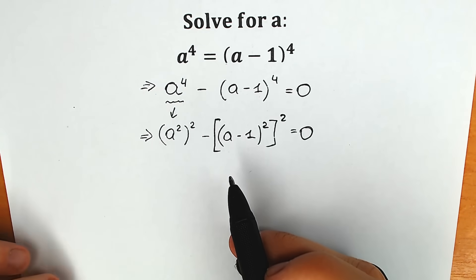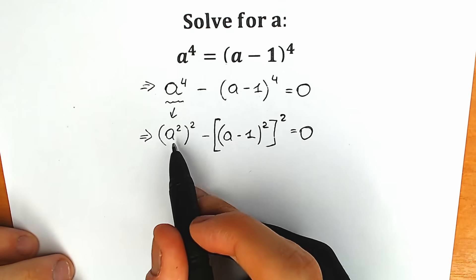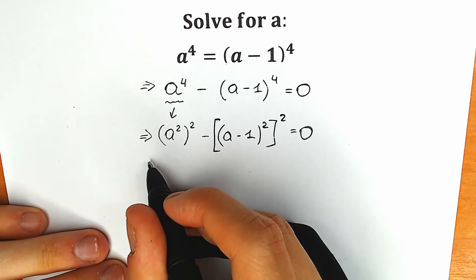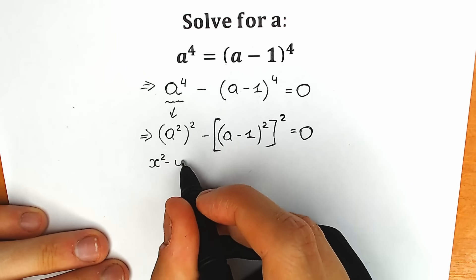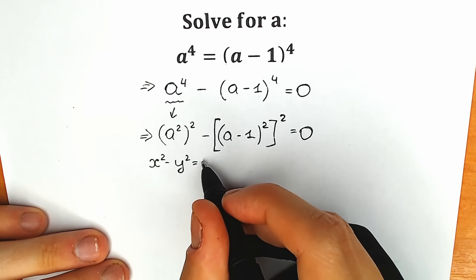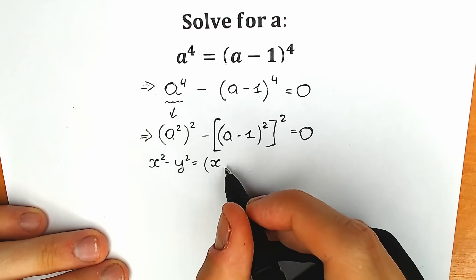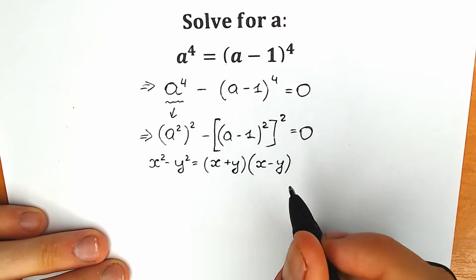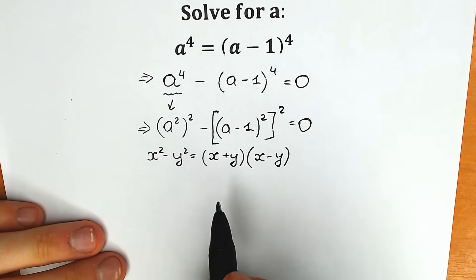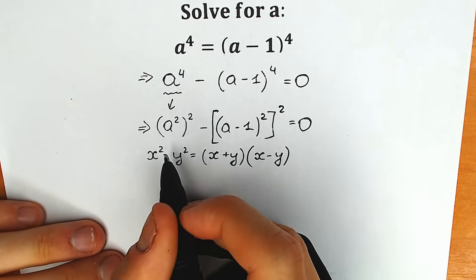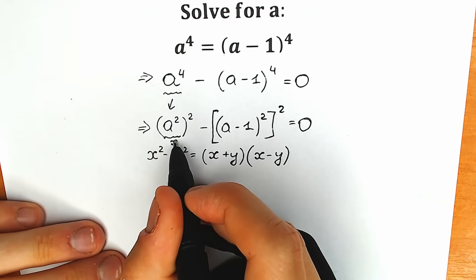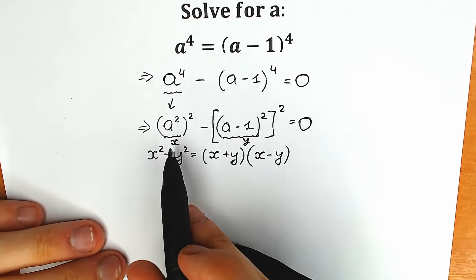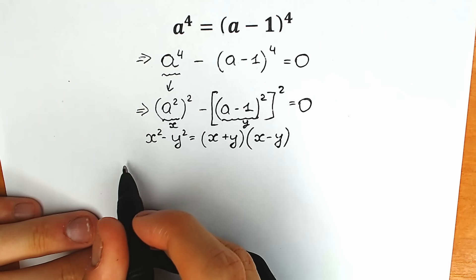Now if you look closely, we can consider this as a difference of two squares — and everyone should know this school formula. Written in terms of x and y: x² minus y² equals (x plus y) times (x minus y). This is the basic school identity. Let's apply it to our question, identifying the first squared term as x and the second as y, giving us addition in one factor and subtraction in the other.